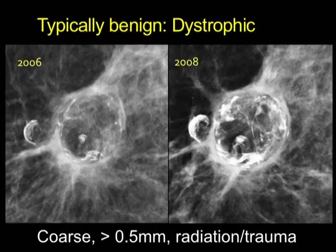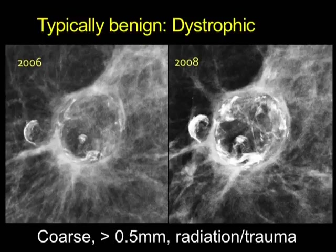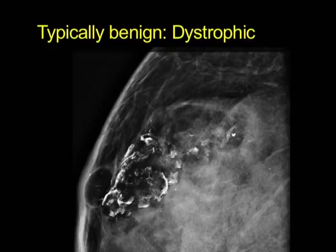In the same category are dystrophic calcifications, which also have a lucent center and can evolve over time to become more coarse. They're usually very thick and usually have some sort of background of radiation, trauma, or surgery. Sometimes dystrophic calcifications can be palpable. If you can get a view showing the calcifications on the side of the palpable area with the dystrophic appearance and lucent centers, you're done.